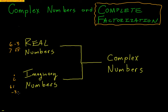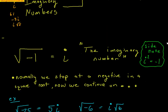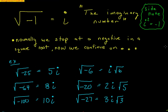Imaginary numbers look like 6i, negative 3i, i√2. We usually put the i in front if it's a square root so we don't think it's inside. The imaginary number i is the square root of negative 1, so anytime you end up with a negative inside a square root, that is i. When we square both sides, i² equals negative 1 — so i squared actually becomes a real number.